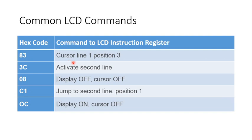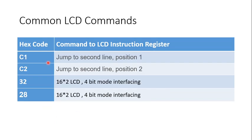Additional commands: 83 — cursor line 1, position 3. 3C — activate second line. 08 — display off, cursor off. 0C — display on, cursor off. C1 — jump to second line position 1. C2 — jump to second line position 2. 32 — this is also important for 16x2 LCD in 4-wire mode of interfacing.